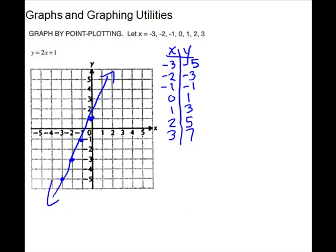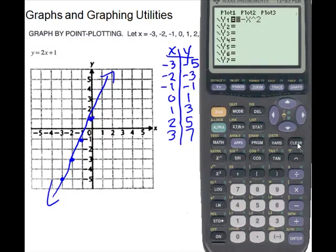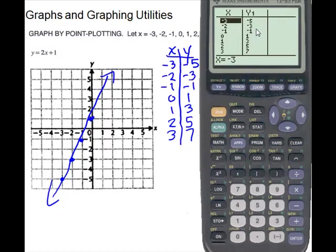Now we'll pull up the calculator. I'll switch the scale back to standard. Go to y equals, clear, and put in the new equation: 2x plus 1, then graph. There we go — our lines look alike. You can also look at the table using second graph, and there you can fill in the values for the rest of the table.